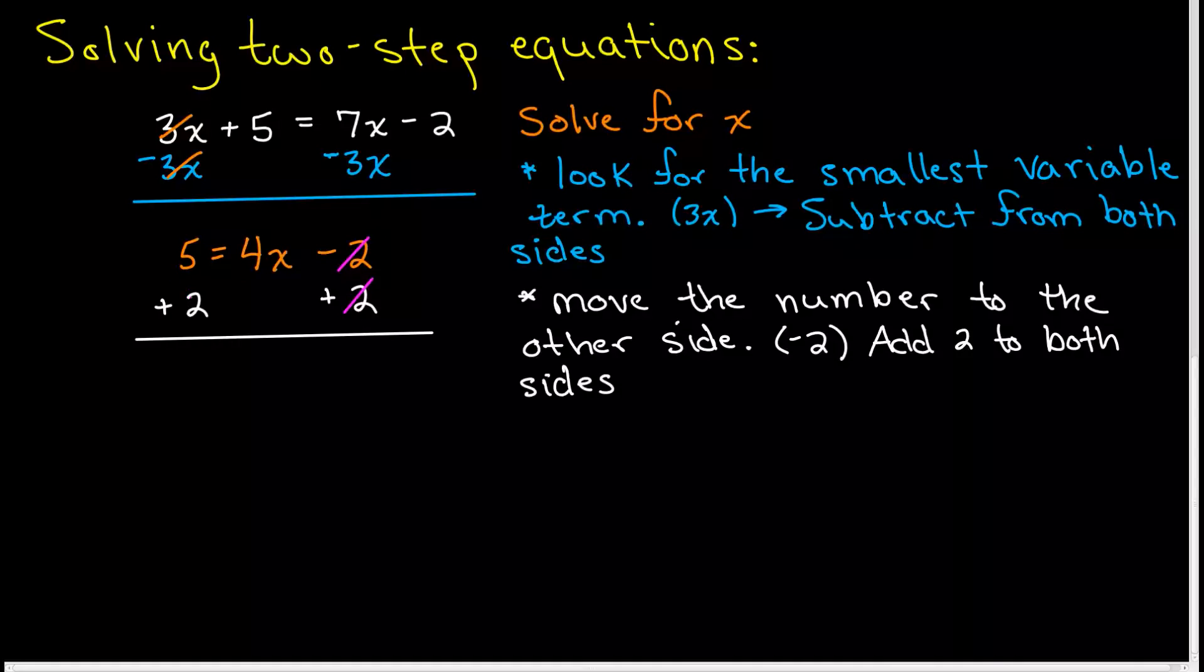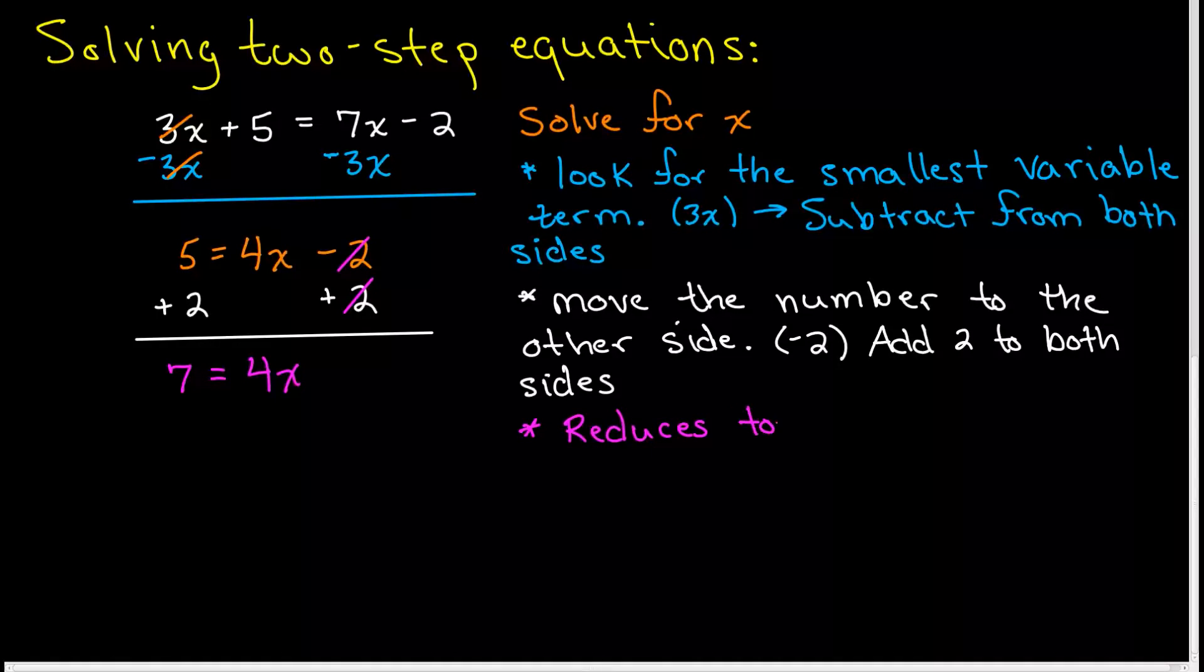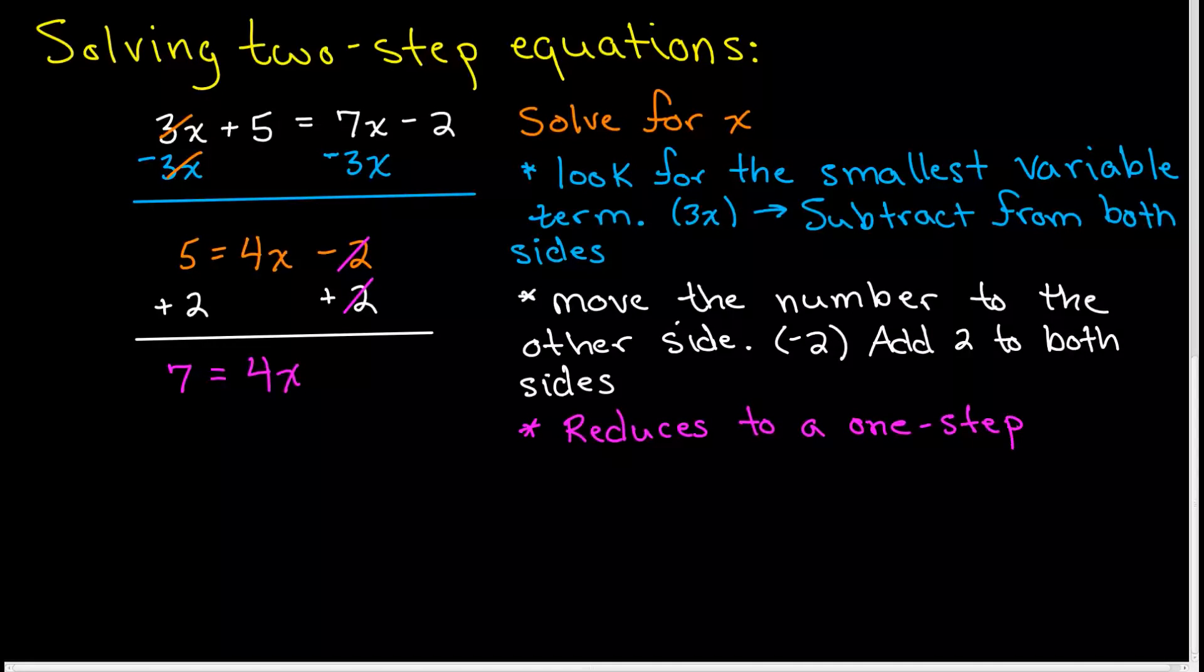Simplifying this, 5 plus 2 will give us 7. We'll have 7 is equal to, bring down your 4x. 7 is equal to 4x. Now, what this is reduced to is a one-step equation. We know how to solve those. There's only one operation. That's why they call this a one-step equation.